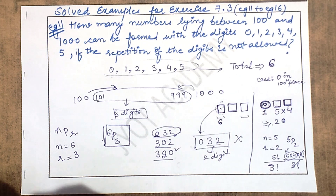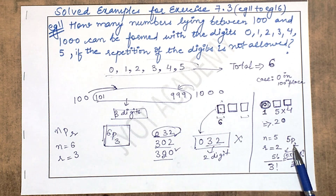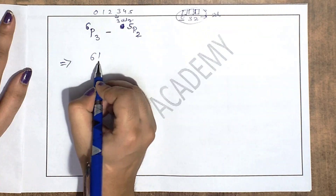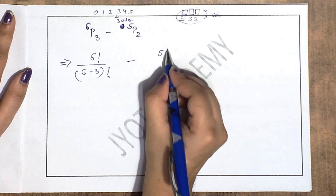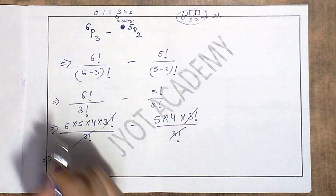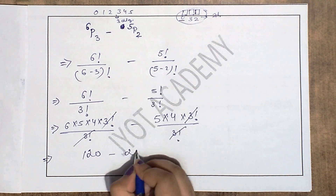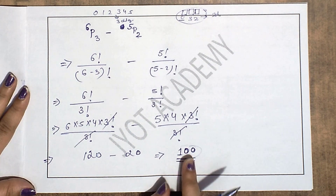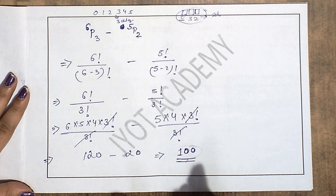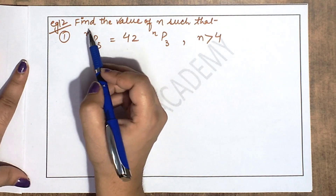Jab hundreds place pe 0 aata hai toh 2 digit numbers bante hain jo mujhe nahi chahiye, isliye 20 minus karni hai. Final answer: 6P3 − 5P2 = 120 − 20 = 100. Aise 100 numbers honge jismein repetition nahi hogi aur 0 hundreds place pe nahi hoga.